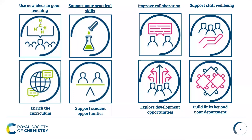The Royal Society of Chemistry has two main objectives that are split into four subcategories for advancing the chemical sciences. On the left hand side we're looking at delivering high quality chemistry teaching in the classroom, and on the right hand side we're looking at creating a supportive and effective department within your school.